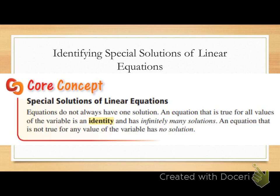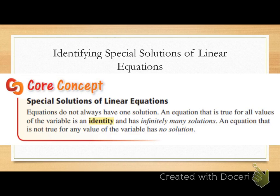Sometimes we have special solutions when solving linear equations — we don't always have just one solution. An equation that is true for all values of the variable is called an identity, and it has infinitely many solutions. An equation that is not true for any value of the variable has no solution — no number you could ever plug in would make it true.